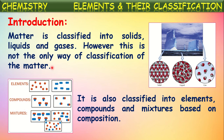Elements contain only one kind of atoms. Compounds contain atoms of different elements combined together. If different kinds of elements and compounds mix together, it is called a mixture. So matter is classified into elements, compounds and mixtures based upon chemical composition.